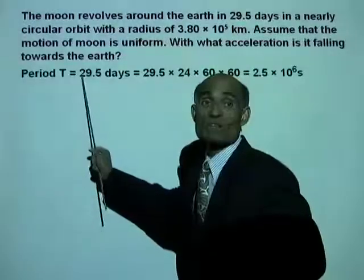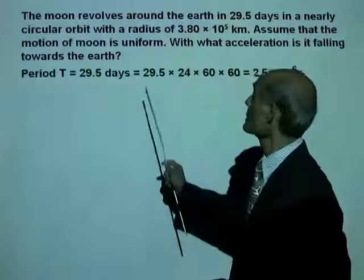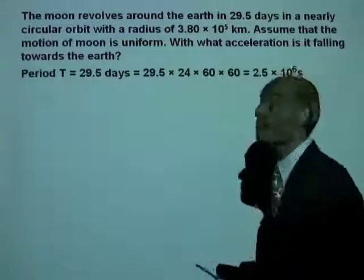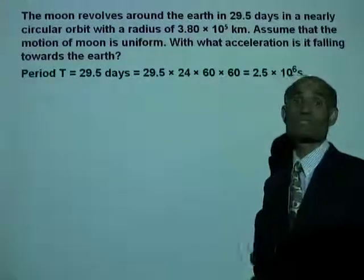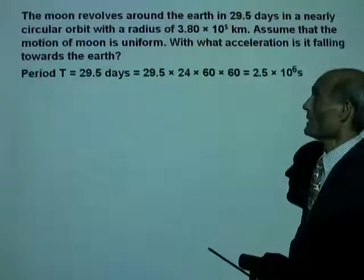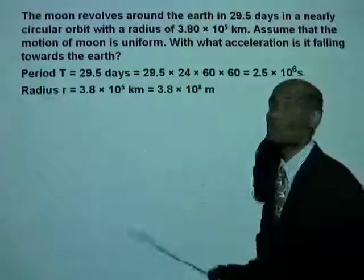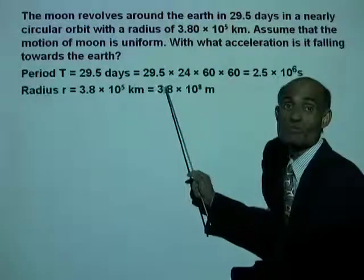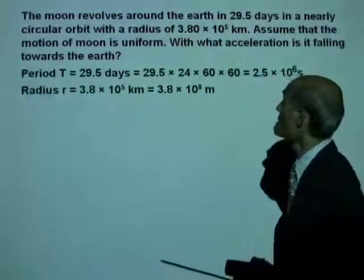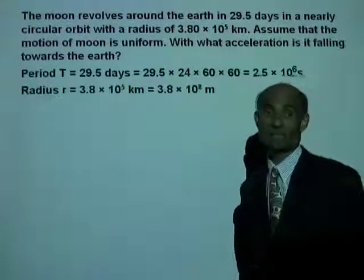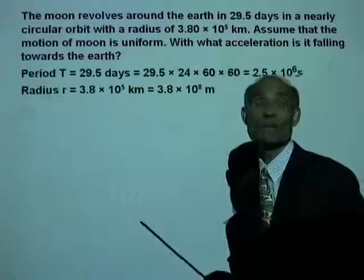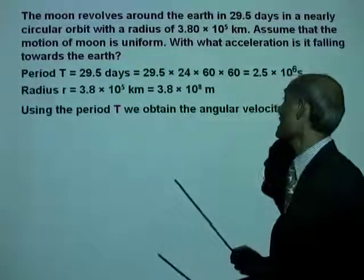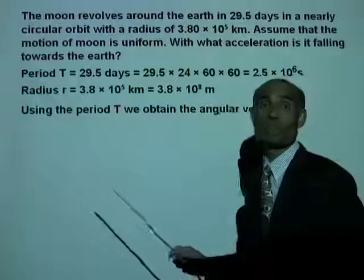The period is 29.5 days. Convert that to seconds: that is 2.5 times 10 to the power of 6 seconds. The radius is 3.8 times 10 to the 5 kilometers — convert that to meters: 3.8 times 10 to the 8 meters. Those are the data we know. Using the period T, we obtain the angular velocity omega.